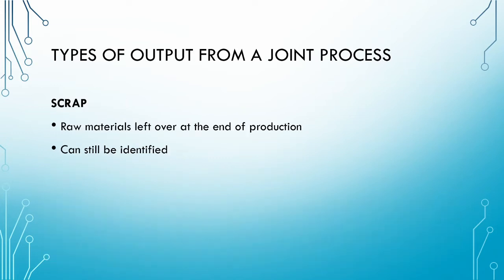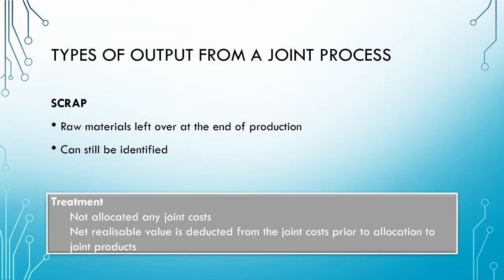Next, we have scrap. Scrap refers to any leftover raw material at the end of the production process; these raw materials are still identifiable as such at the end of the process. The treatment of scrap is the same as that for by-products — we do not allocate any joint costs to the scrap. Rather, we deduct the net realizable value of the scrap from the joint costs to be allocated.